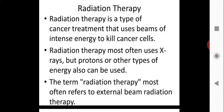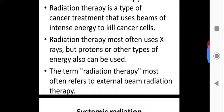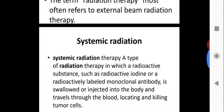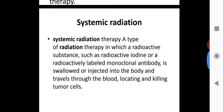Radiation therapy is a type of cancer treatment that uses beams of intense energy to kill cancer cells. It often uses X-rays, but protons or other types of energy can also be used. The term most often refers to external beam radiation therapy. In systemic radiation therapy, a radioactive substance such as radioiodine or a radioactivity-labeled monoclonal antibody is swallowed or injected, and travels through the blood to locate and kill tumor cells.